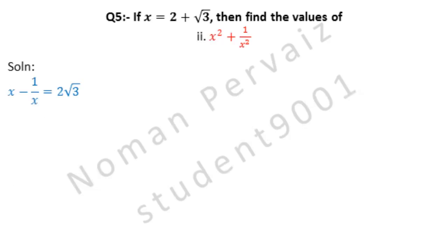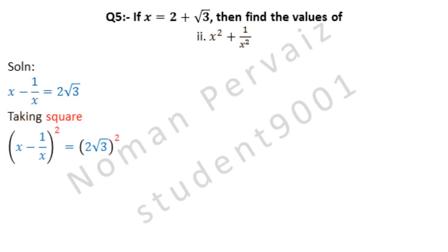Question number 5, part 2: if x is equal to 2 plus under root 3, then find the value of x squared plus 1 over x squared. We start by taking the value of x minus 1 over x from part 1, and then take the square on both sides of the equation.